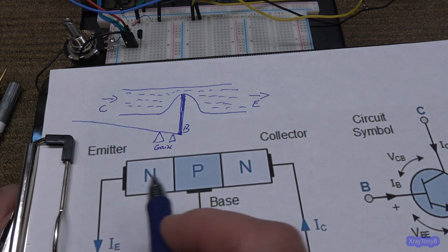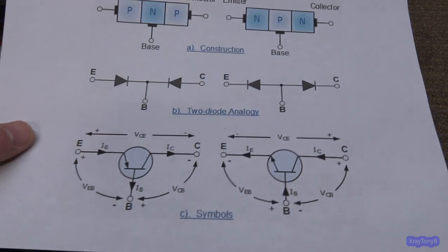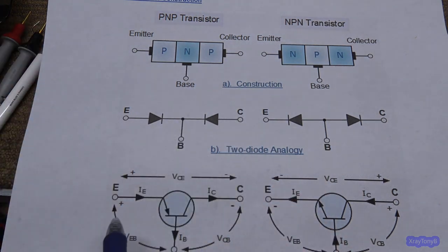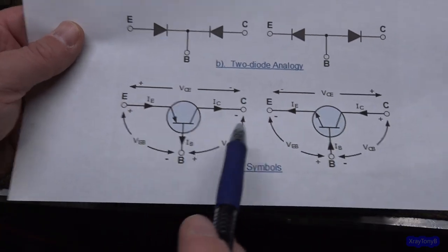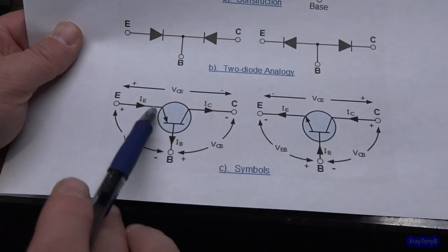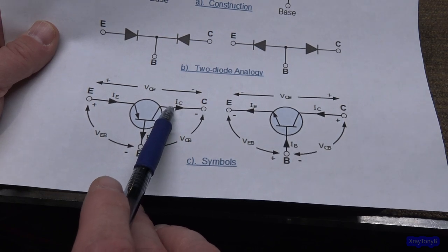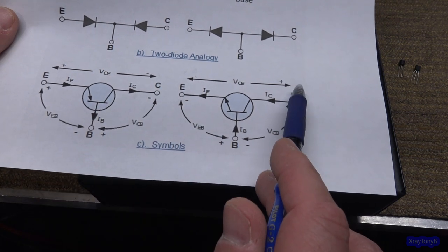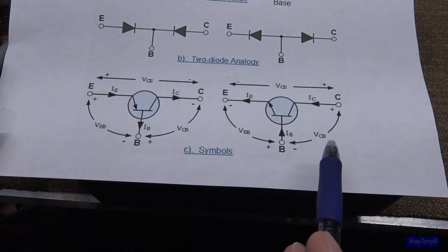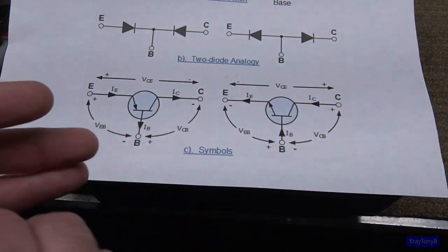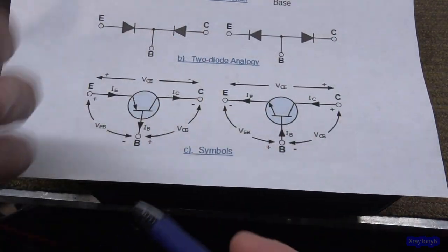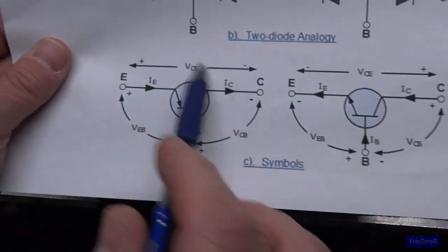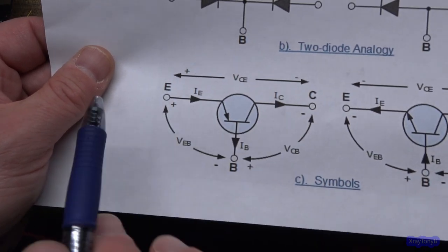That's the whole idea of the collector, base, and emitter of a transistor. I'm not going to talk about PNP transistors too much, because it's essentially the same theory — only the polarity is reversed. On a PNP you have positive voltage on the emitter and negative on the collector, whereas on an NPN you have negative on the emitter and positive on the collector. It's like taking the battery and turning it around. We're going to focus this video on the NPN transistor, and just know that reversing the polarities gives you the same operation.